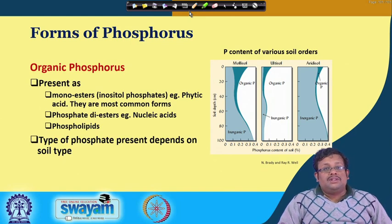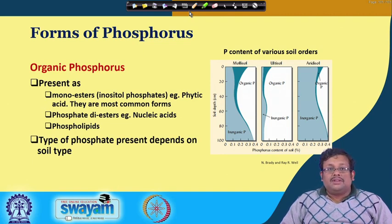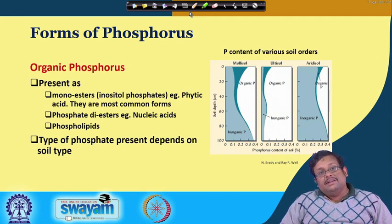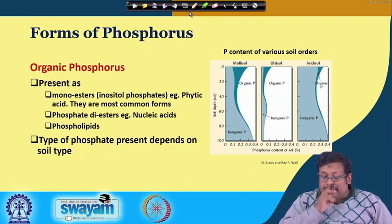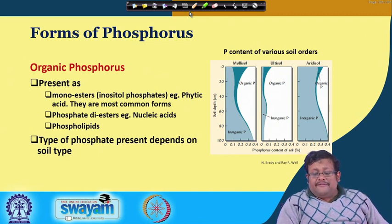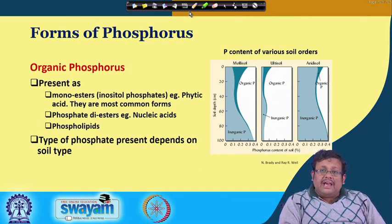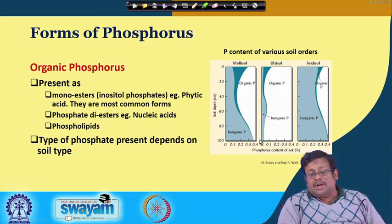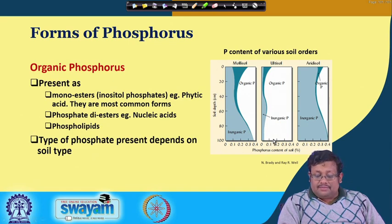Organic phosphorus is present as mono-esters or inositol phosphates; examples are phytic acids, and these are the most common organic forms of phosphorus. Apart from that, phosphorus is present in phosphate diesters like nucleic acids, and also in phospholipids. The type of phosphate present depends on the soil type — in mollisol, organic phosphorus concentration is higher at the surface but lower in the subsoil. In alfisol and aridisol, comparatively less organic phosphorus is present at the surface and it gets depleted in the subsurface.